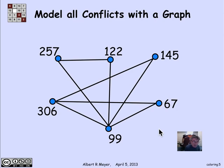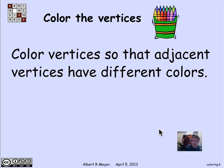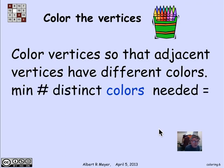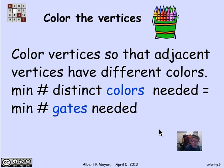Now we can talk abstractly about the coloring problem: assign colors to the vertices such that no two adjacent vertices have the same color. Adjacent vertices should have different colors. It should be clear from how we derived this graph from the aircraft schedules that the minimum number of distinct colors needed to color the graph corresponds to the minimum number of gates needed to serve the aircraft.